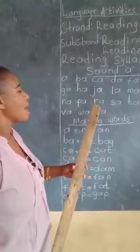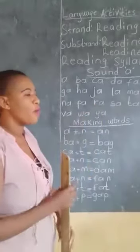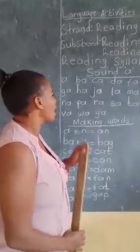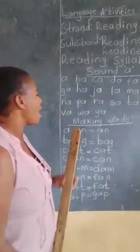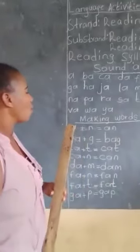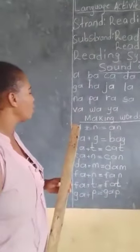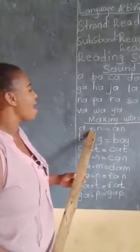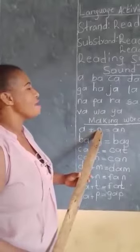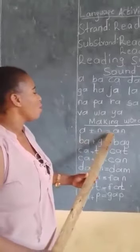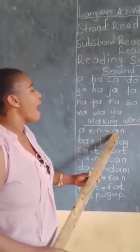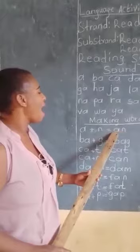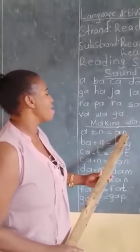And now we are going to make a few words of sound A. We are starting with A. A plus d plus n — we make an. An.